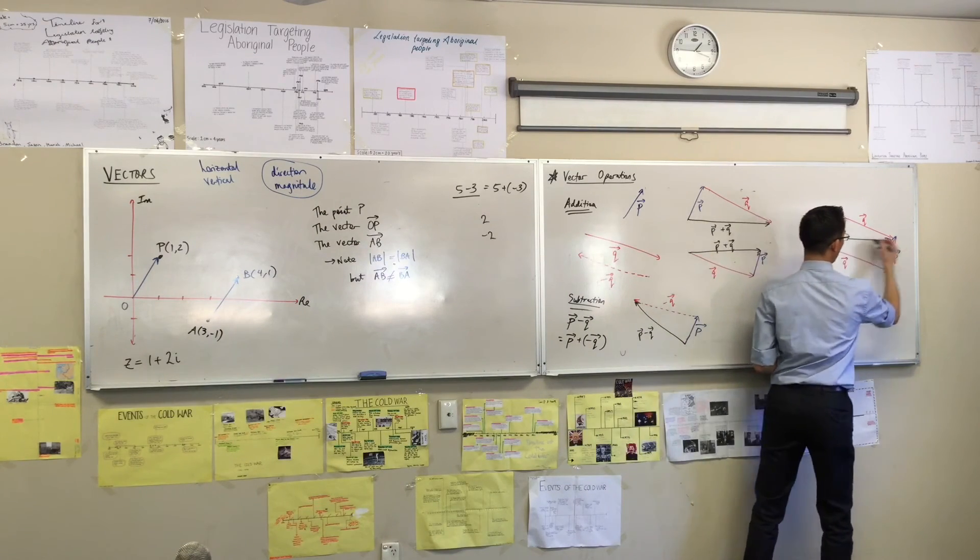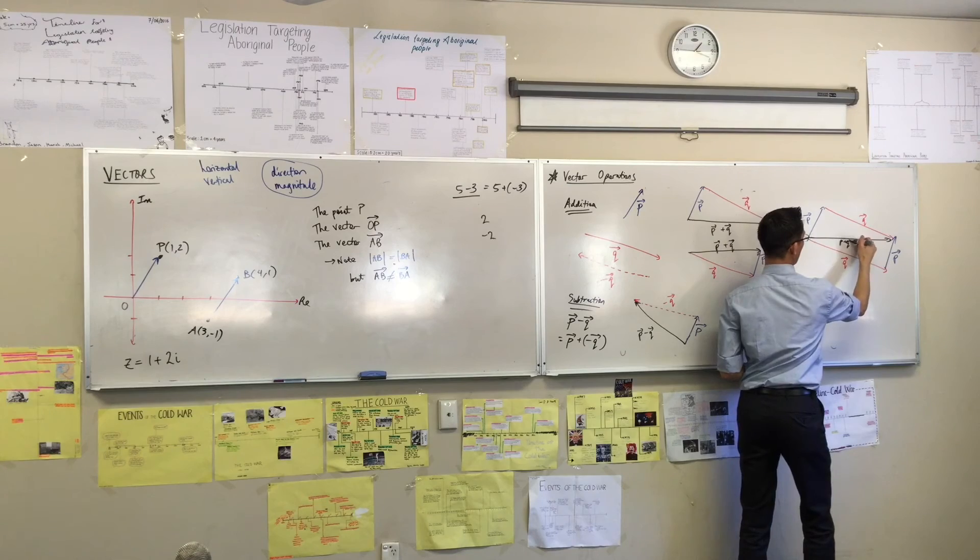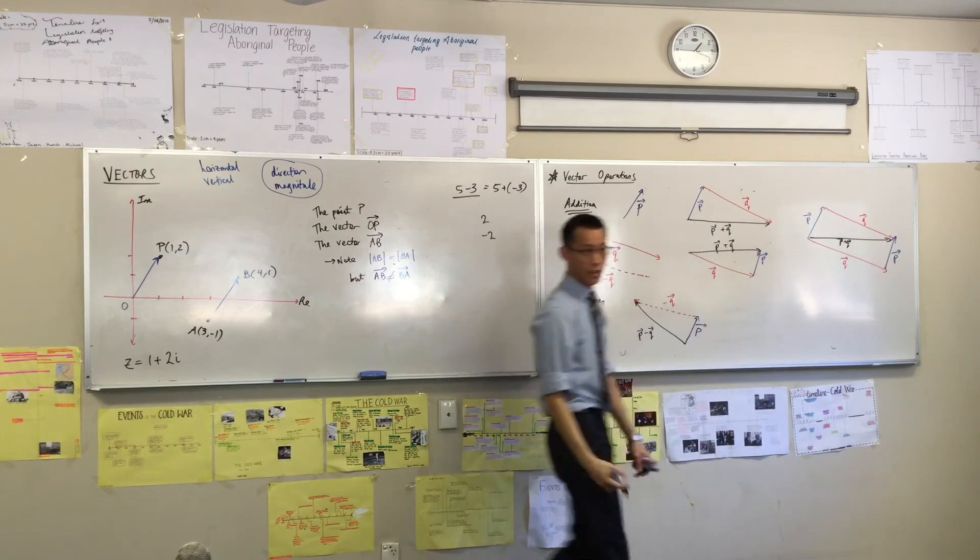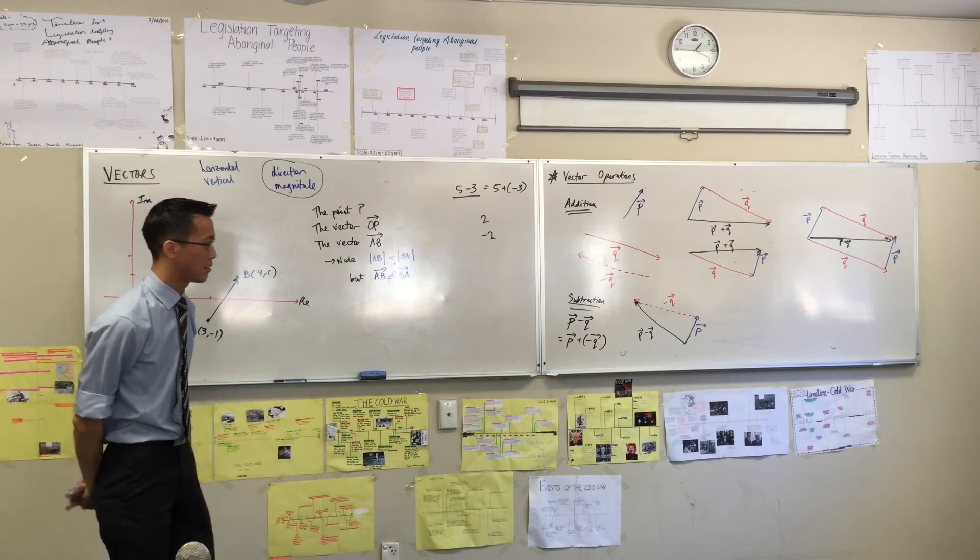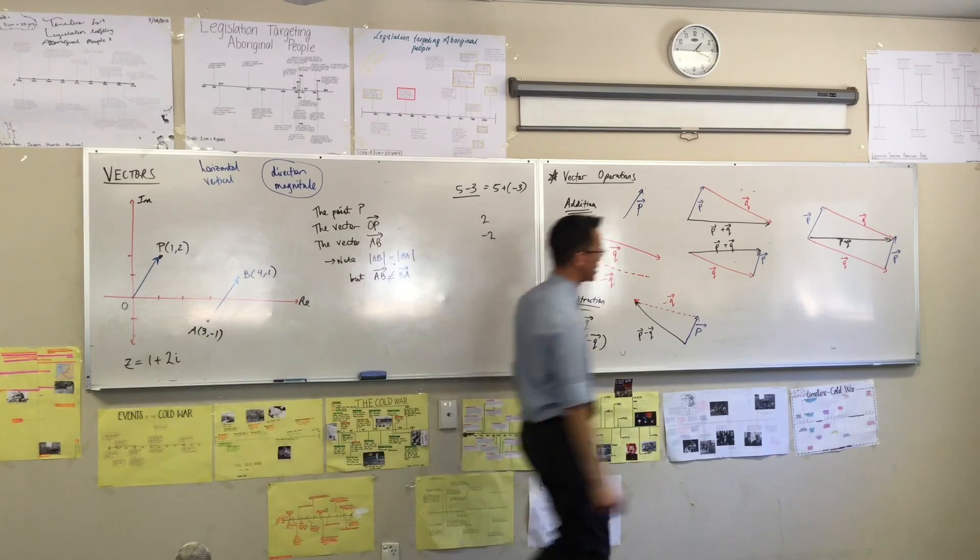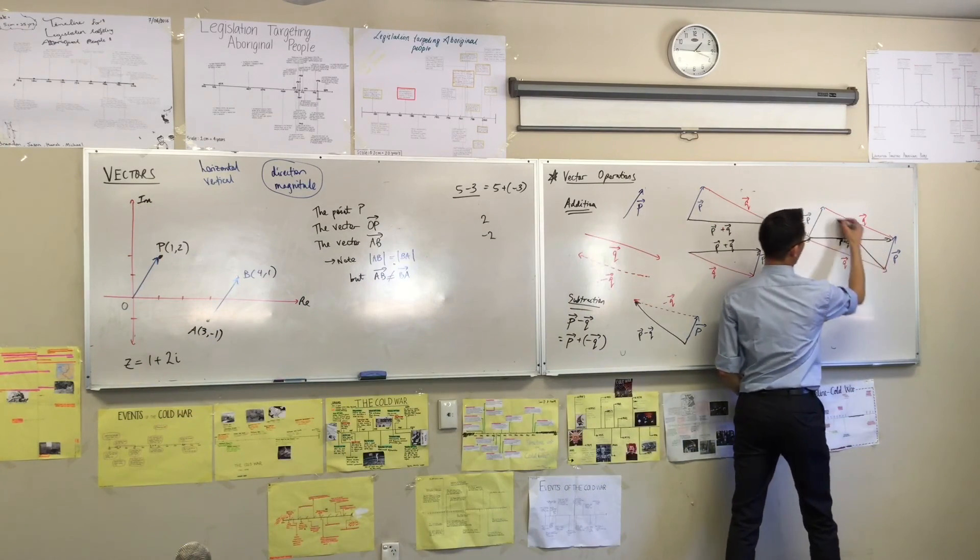Here's p plus q. Do you see it? It's running across there, it's one of the diagonals, right? Where's p minus q? Where is it? It's the other diagonal, isn't it? It's that one.